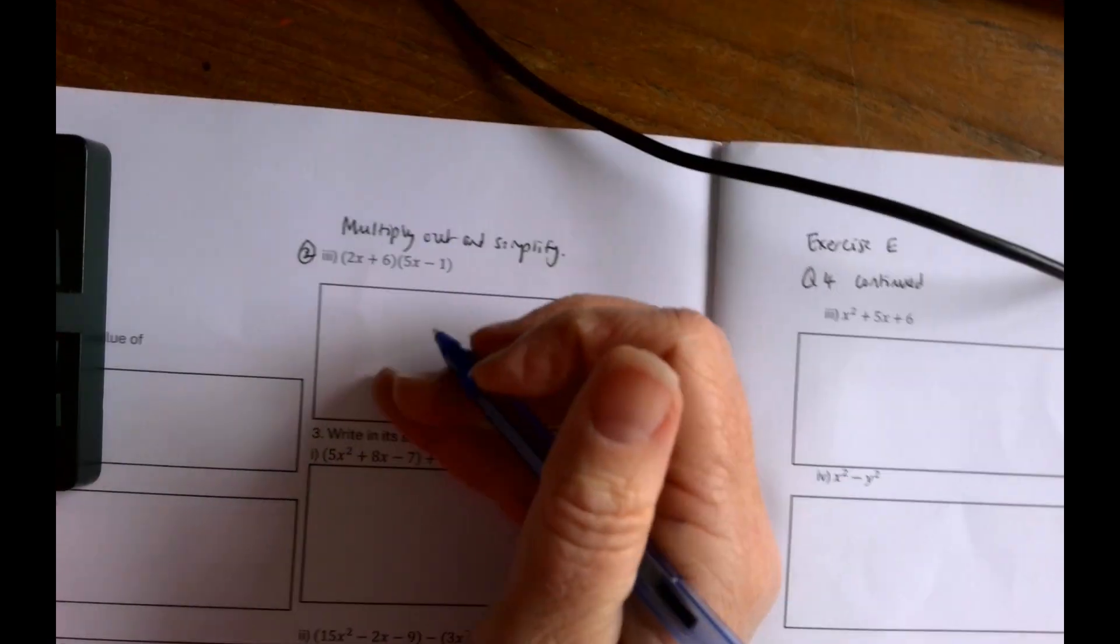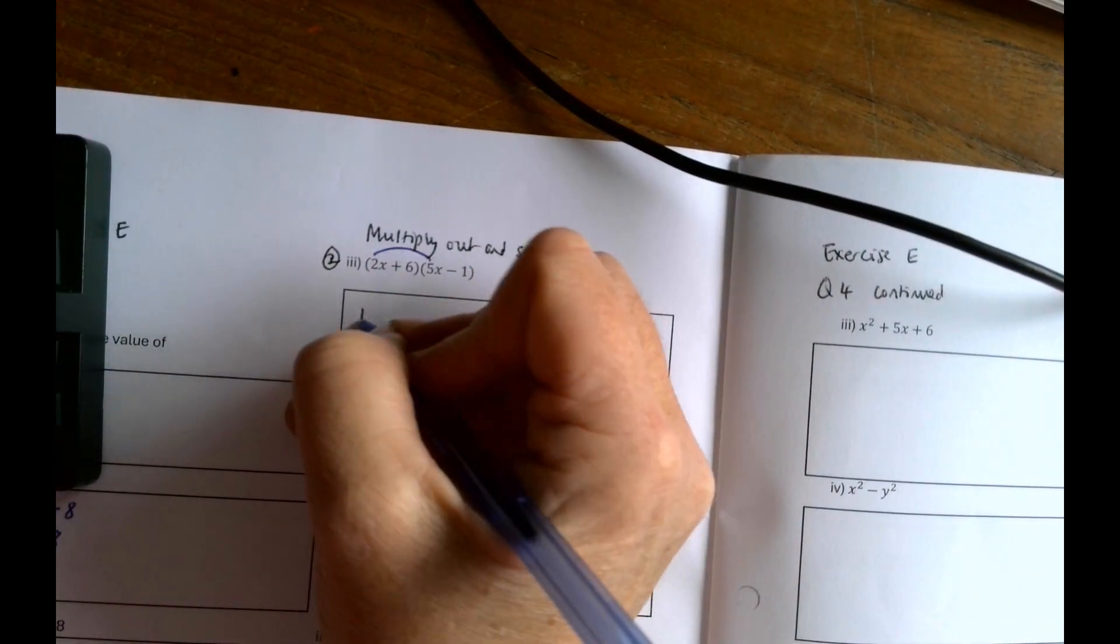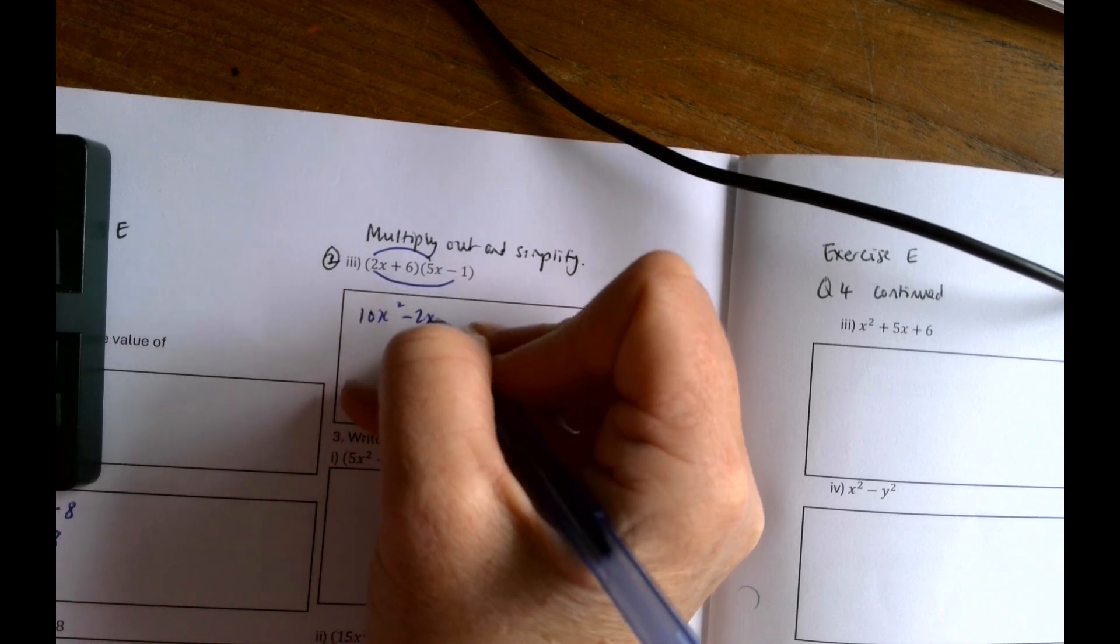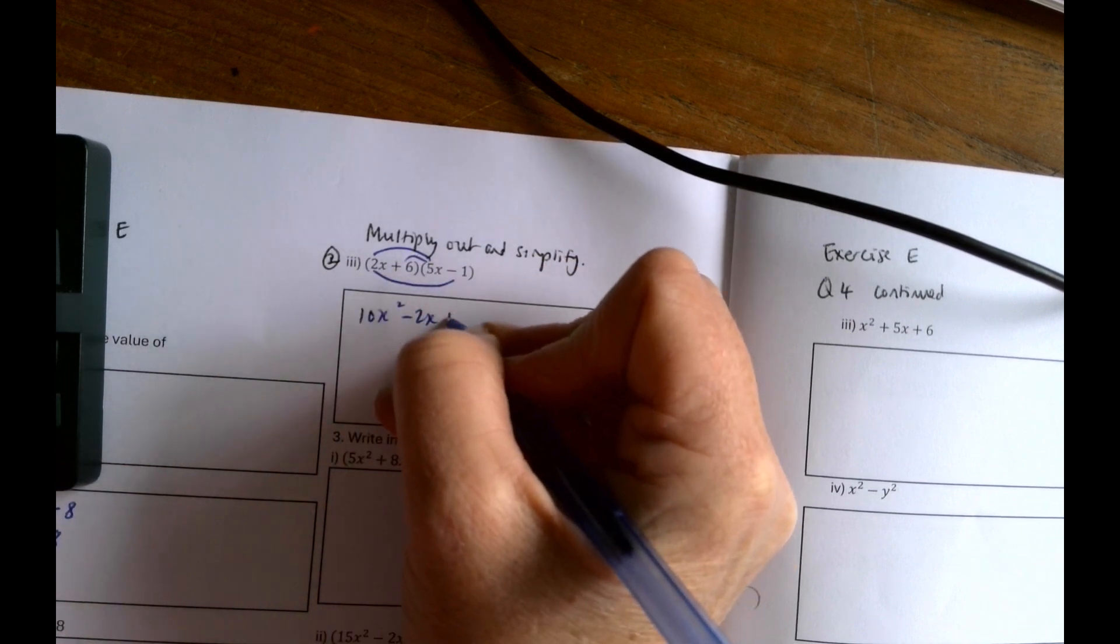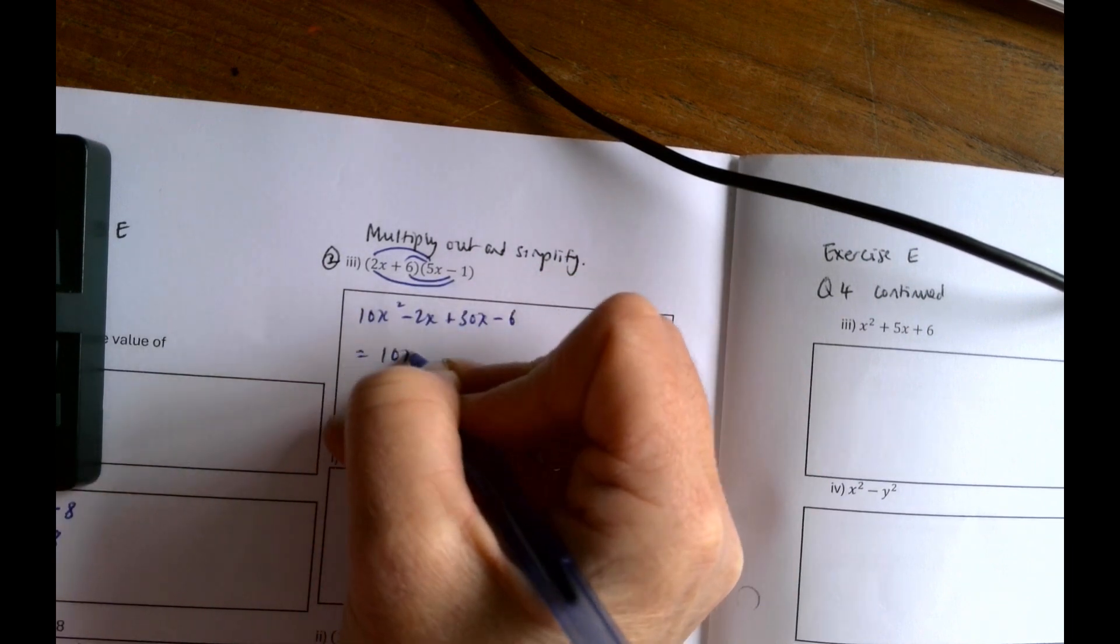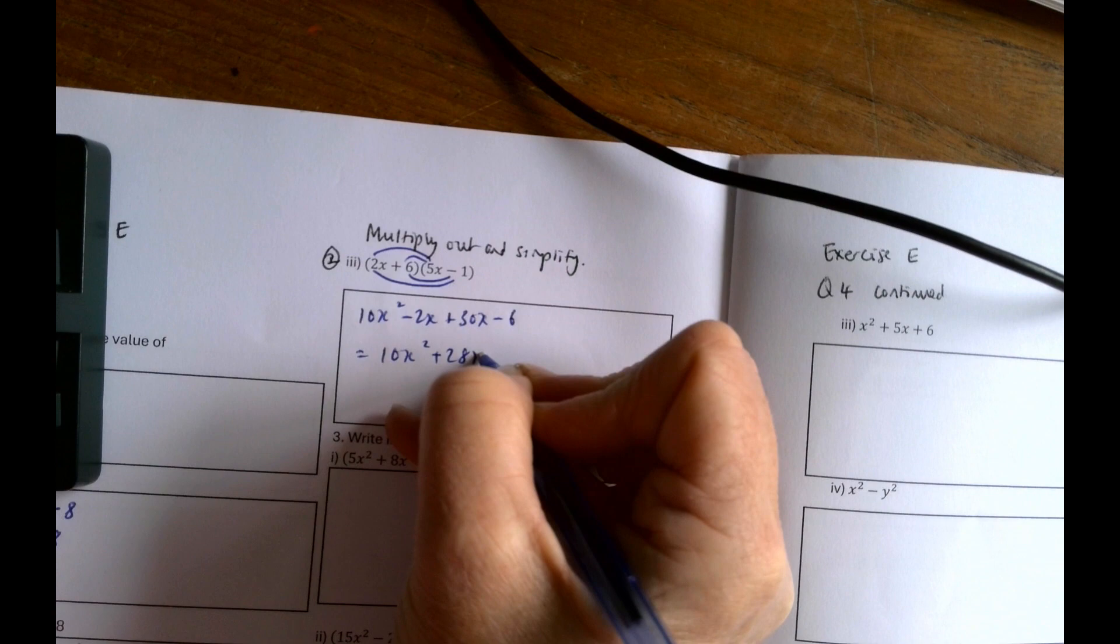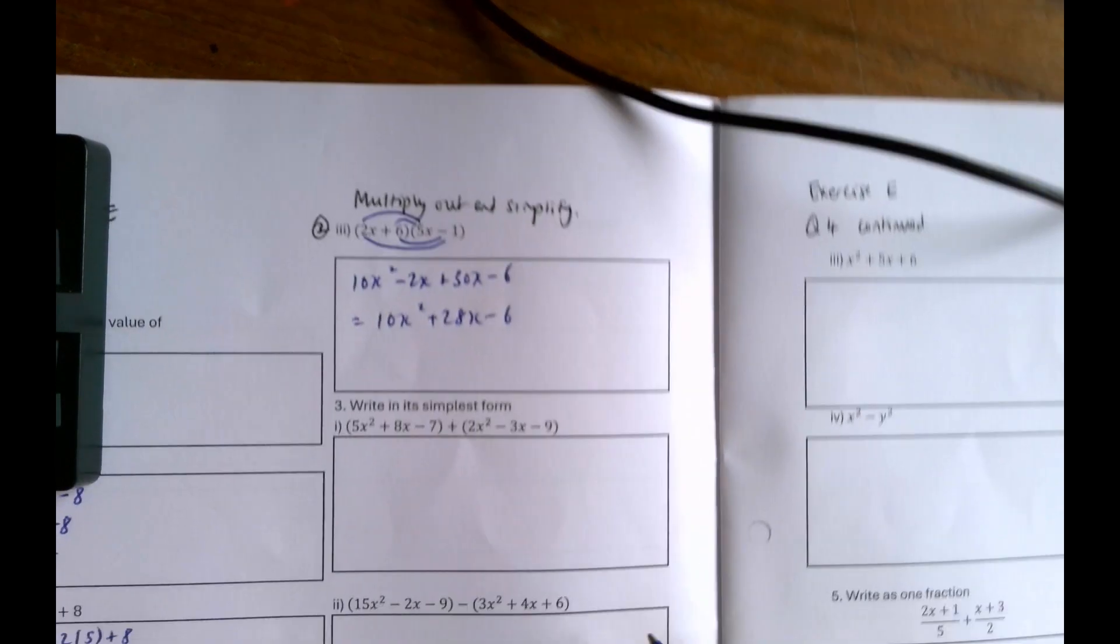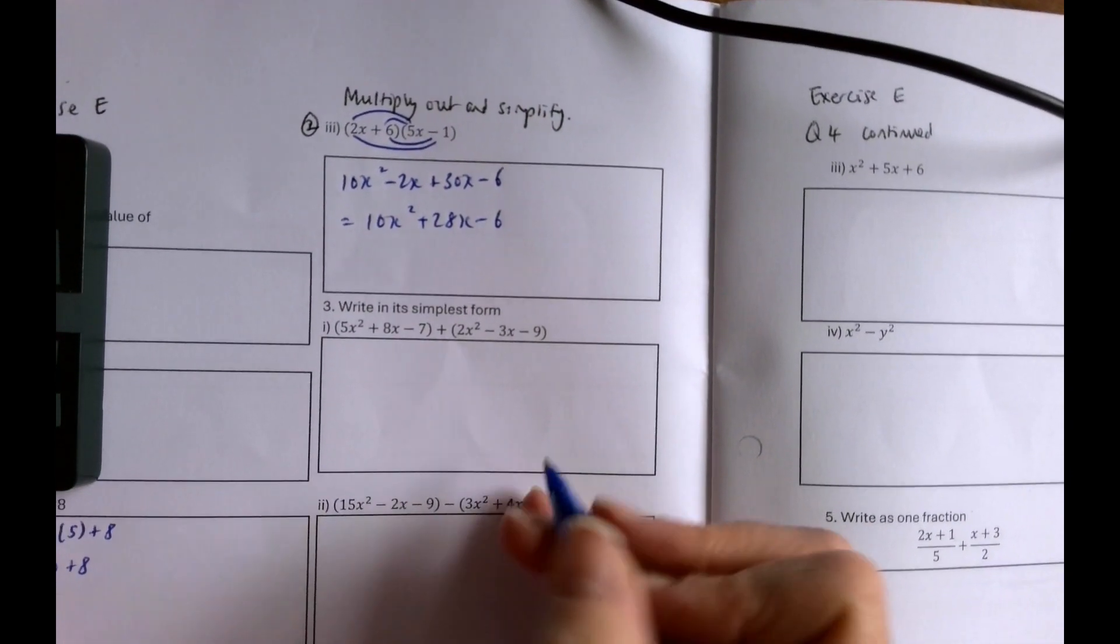And again, multiply and simplify. 2x by 5x is 10x squared, 2x by minus 1 is minus 2x, 6 by 5x is 30x, and 6 by minus 1 is minus 6. So 10x squared plus 28x minus 6. You really should be able to do that no problem at all at this stage.